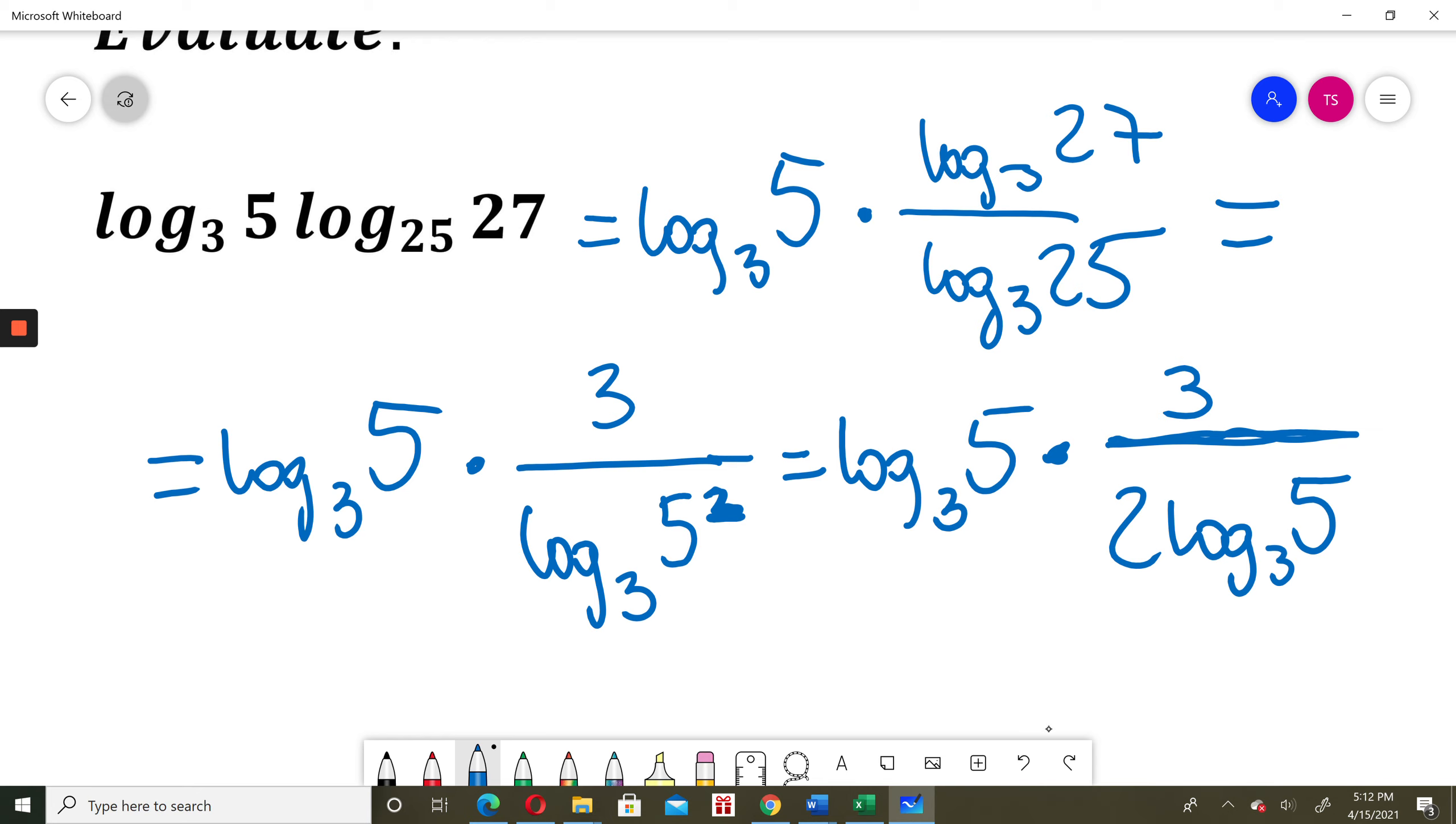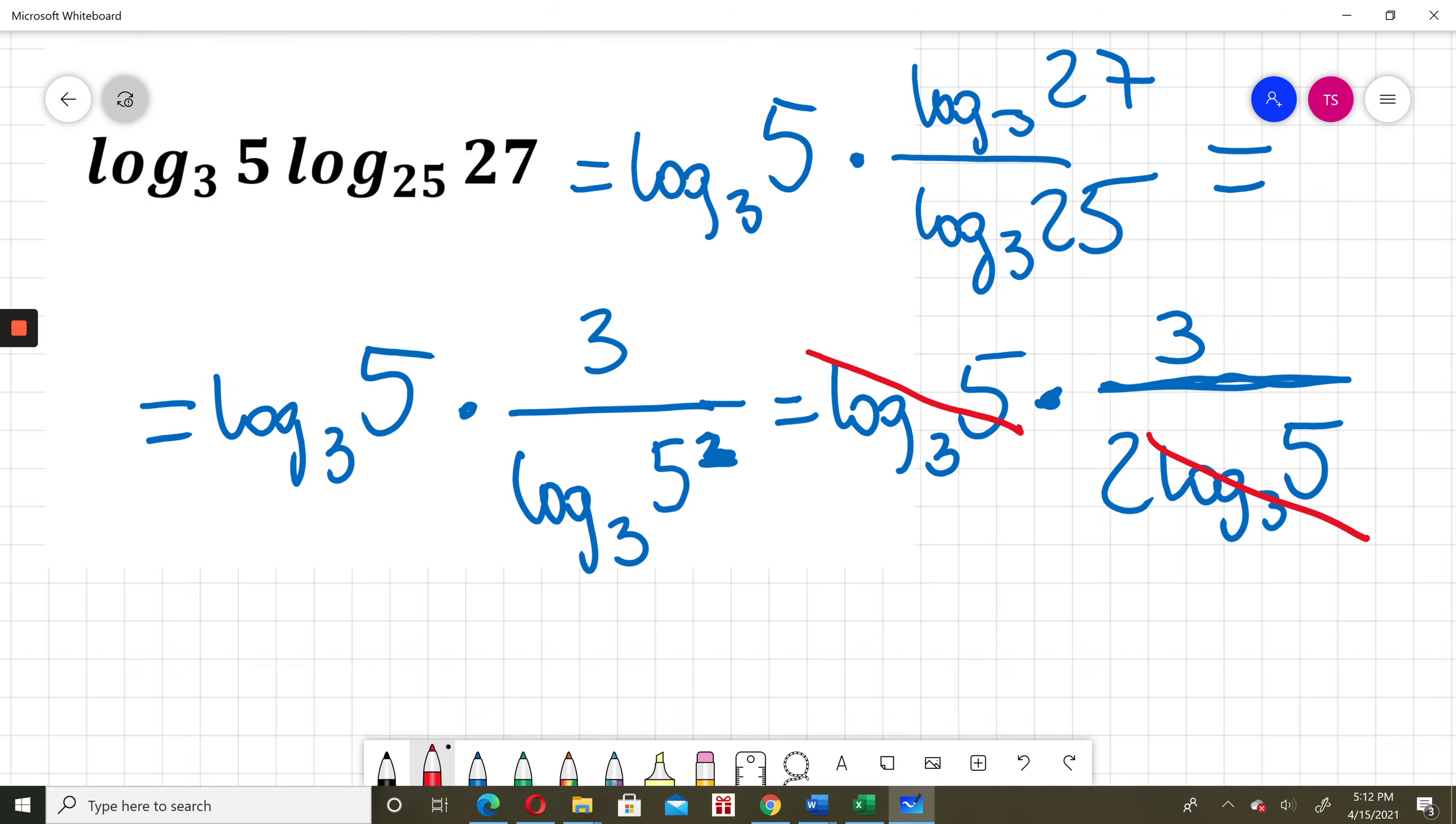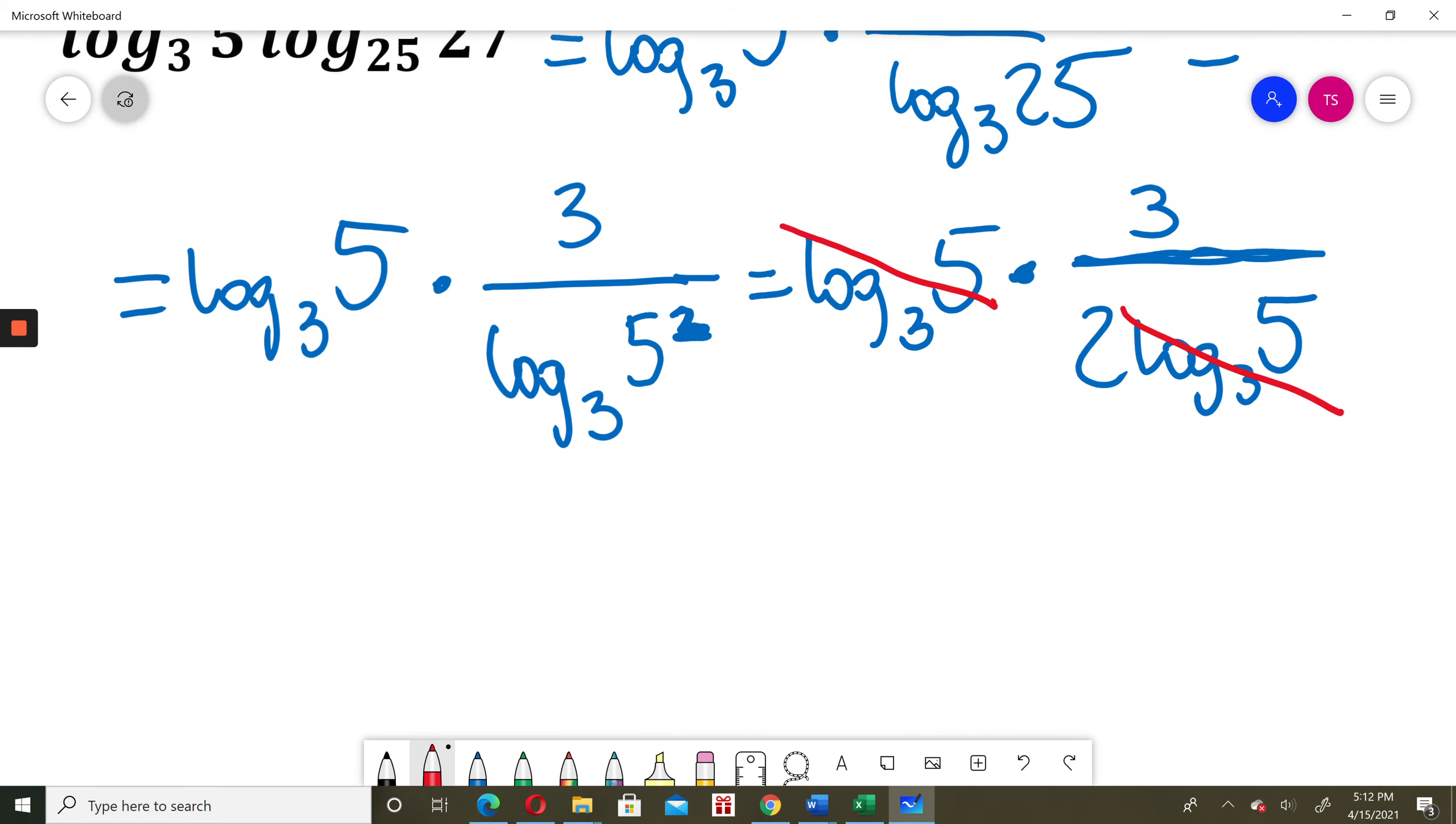I can simplify log base 3 of 5 divided by log base 3 of 5. The same thing divided by the same thing is just 1. So now I have just 3 divided by 2, so I can write this answer as 1.5.